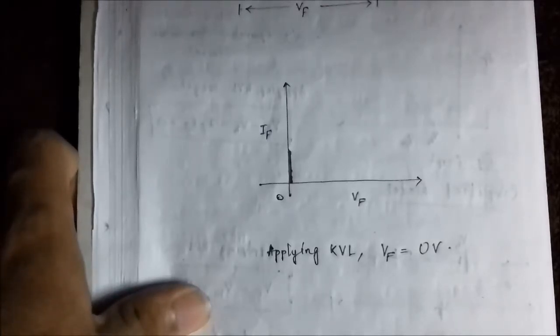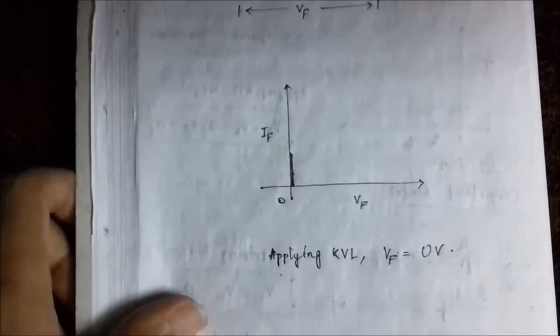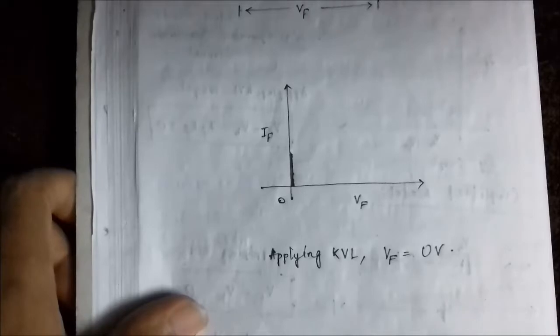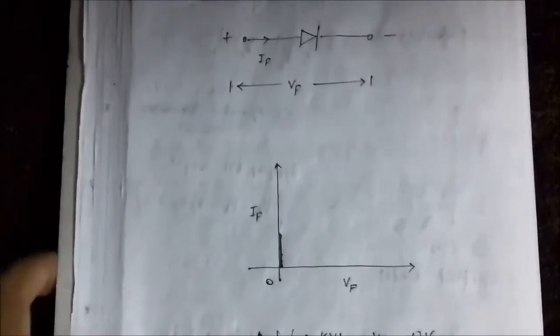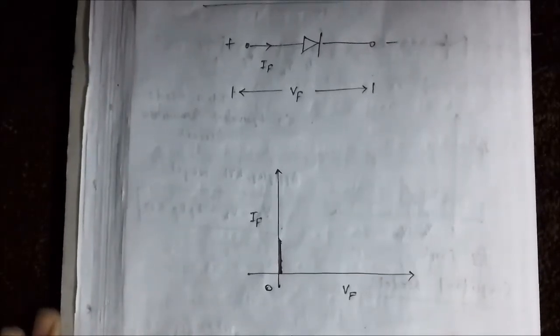Here we have discussed the basic concepts of a PN junction diode, starting from its definition, its modes of biasing, and equivalent circuit. I hope you liked this video. Keep checking into my channel for more such videos on electronics, electrical engineering, instrumentation, and communication. Thank you very much.